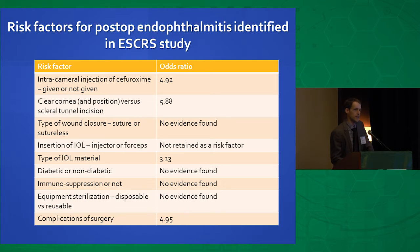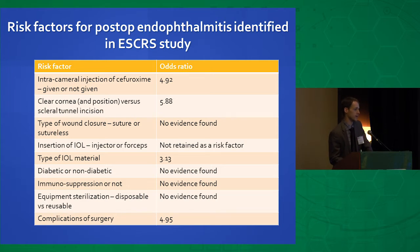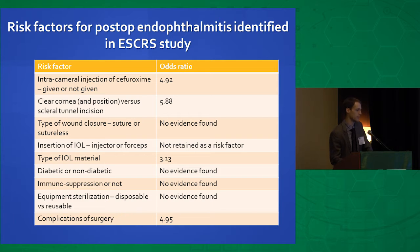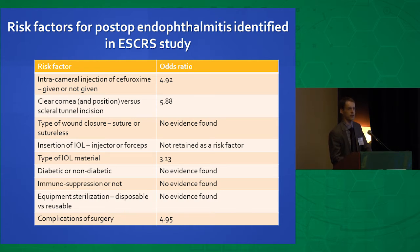In 2007, they did the ESCRS study, based on early success coming out of Sweden with intracameral cefuroxime. Some of the risk factors found significant for developing endophthalmitis were whether or not intracameral cefuroxime was given, clear corneal versus scleral tunnel incisions. The type of wound closure was not found to be significant, nor was IOL insertion. Silicone IOLs were found to be a risk factor, as were surgical complications with communication with the vitreous cavity.